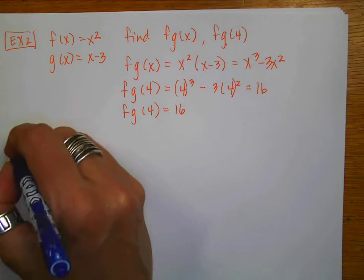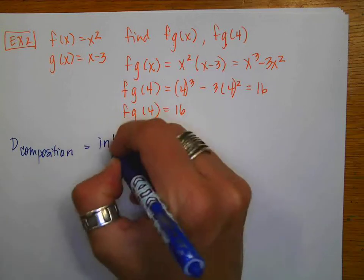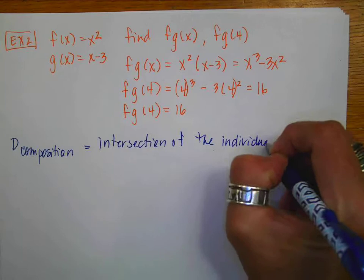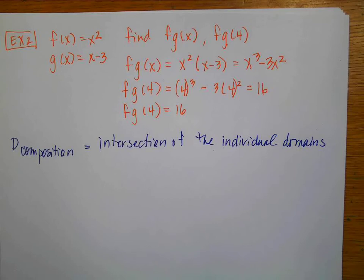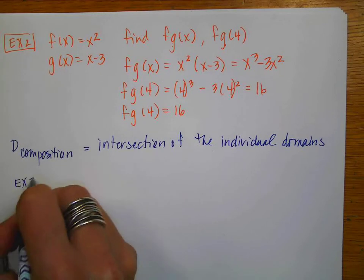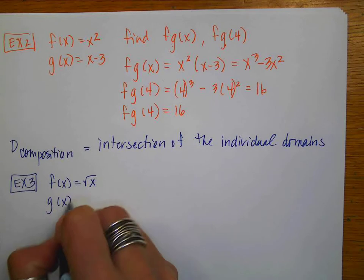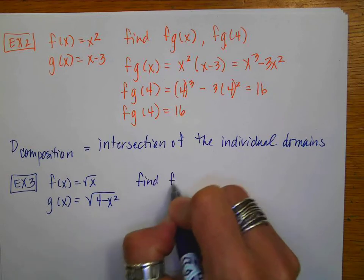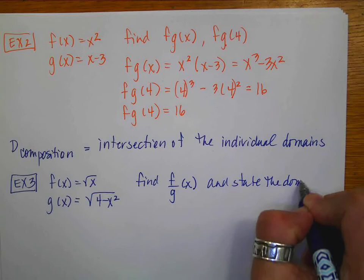Here's what we need to talk about next. When we talk about compositions, the domain of a composition is going to be the intersection of the individual domains. So if I'm doing a composition and want to find the domain, that's just the intersection of the individual domains. Let's do an example: f(x) = √x and g(x) = √(4 − x²), and I want to find (f/g)(x) and state the domain.